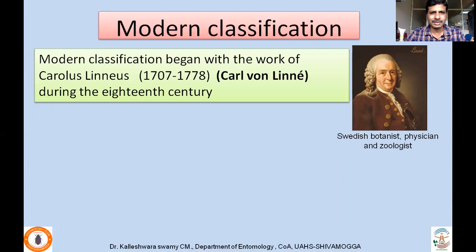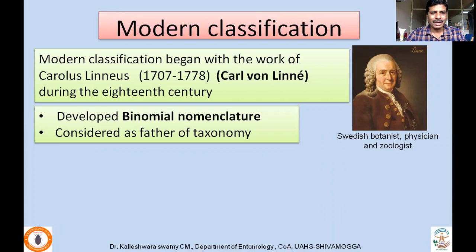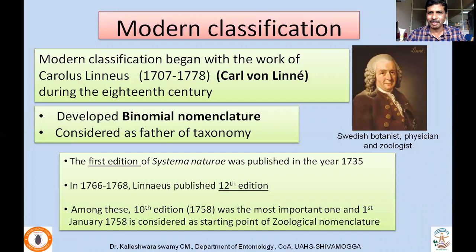Modern classification began with the work of Carolus Linnaeus, who is a Swedish botanist, physician and zoologist. He developed the binomial nomenclature and is considered the father of taxonomy. He published a series of publications under the title Systema Naturae. The first edition was published in 1735. The 12th edition, published in 1766 to 1768, was the last edition and was published posthumously. Among the 12 publications, the 10th edition, published in 1758, was the most important one. January 1st, 1758 is considered as the starting point of zoological nomenclature.